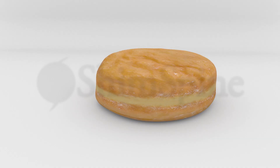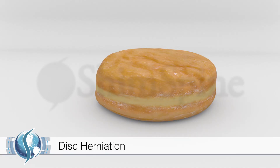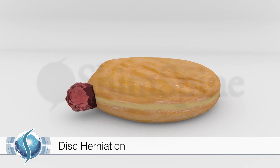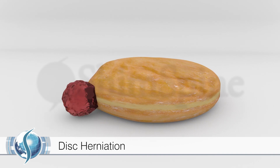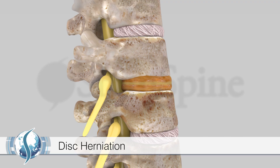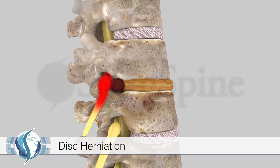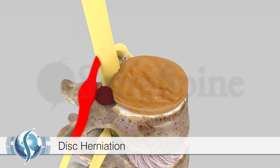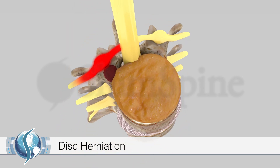The annulus is like the bread that holds the jelly in place in a donut. Like a jelly donut, if pressed, the jelly or the nucleus will come out of the hole in the bread or break in the annulus. The jelly can irritate the nerves and tissues of the spine.